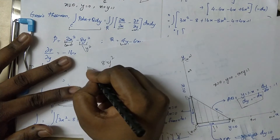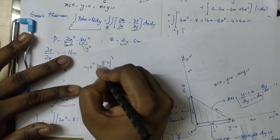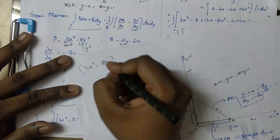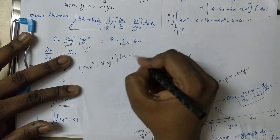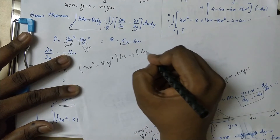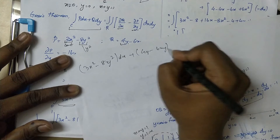So we have 8y squared, 3x squared minus dx, plus dy.